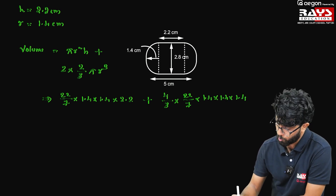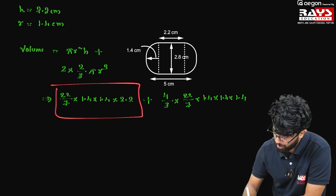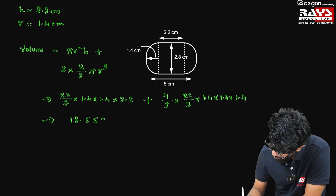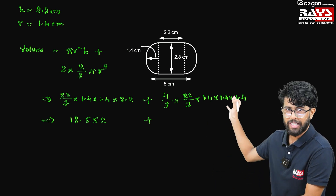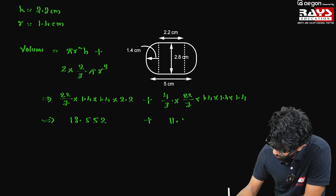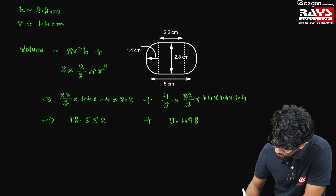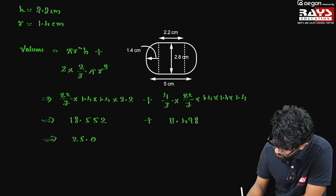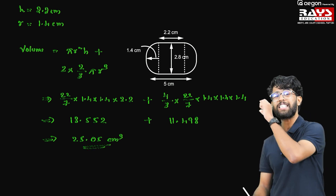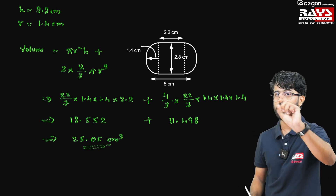While computing the cylinder portion, we get 13.552. Computing the hemisphere portion gives 11.498. Adding both together, we get 25.05 cm³. This is the volume of just one Gulab Jamun.